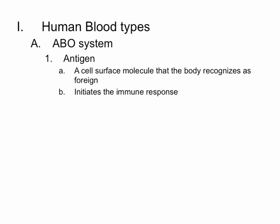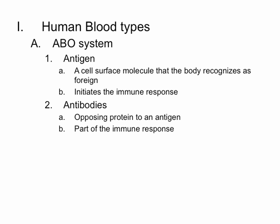What an antigen does is initiate an immune response. Antibodies, on the other hand, are the opposing protein to an antigen. They also function as part of the immune response. Your body is able to recognize itself and anything that's not itself. For anything that's not itself, you're going to create an antibody — thus the name antibody, or 'not self' — and you'll attack that molecule. So again, antibodies are going to recognize anything that is not self.